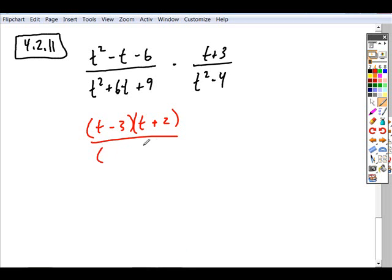In the denominator, this is a perfect square trinomial. Again, you could just find binomial factors, the two factors of 9 whose sum is positive 6 is plus 3. So you have t plus 3 either squared or t plus 3 times t plus 3.